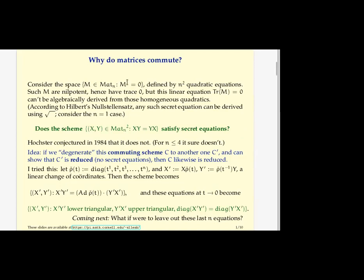What if I told you about matrices that square to zero? Matrices who square to zero are nilpotent. If they're nilpotent, all the eigenvalues are zero. If the eigenvalues are zero, then the trace is zero. And in the process of saying such things, you've derived this linear equation, trace of m equals zero, you've derived it from these homogeneous quadratic equations. And that's not possible without taking a square root somewhere.